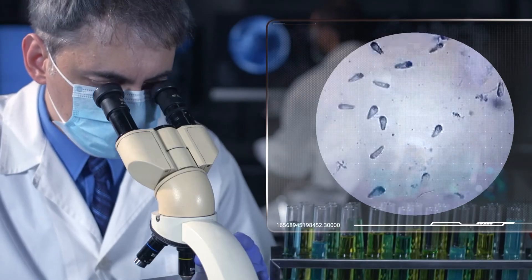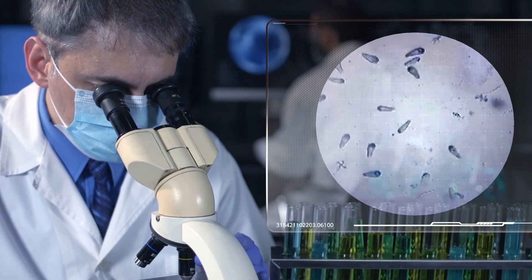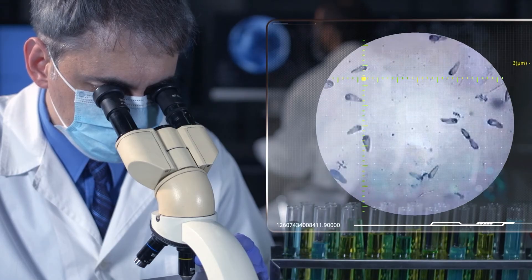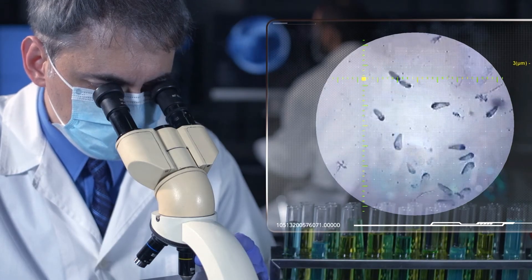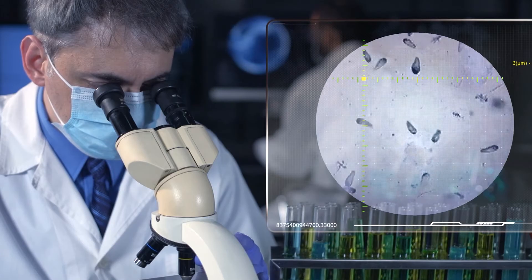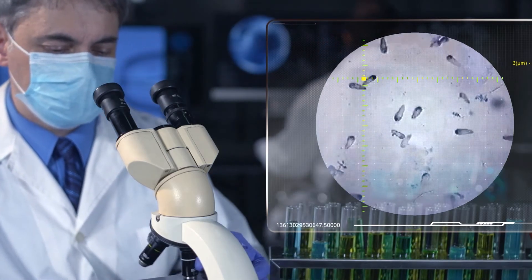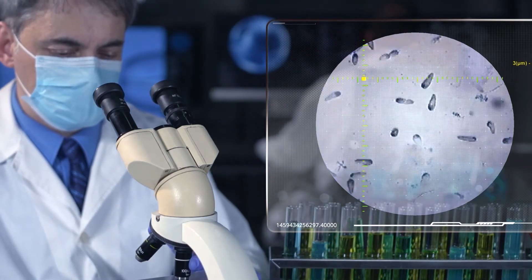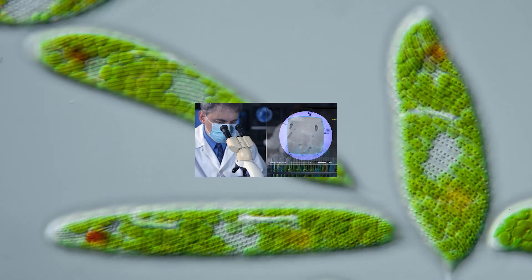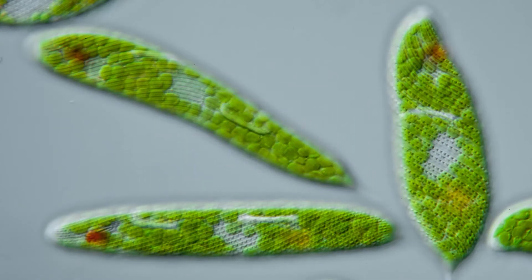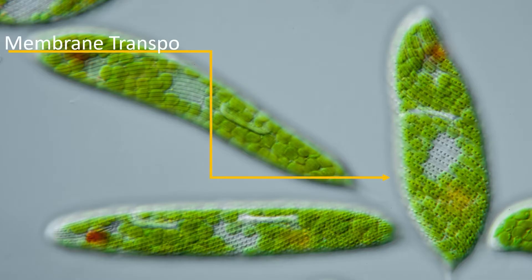It may seem impossible that single-celled organisms are as complex as larger organisms, but even these tiny creatures use many of the same methods of obtaining nutrients and expelling waste products that we do. All cells, whether they are an entire organism by themselves or just one tiny part of a larger organism, need membrane transport mechanisms to maintain solute concentrations, import large molecules, and maintain their water balance.